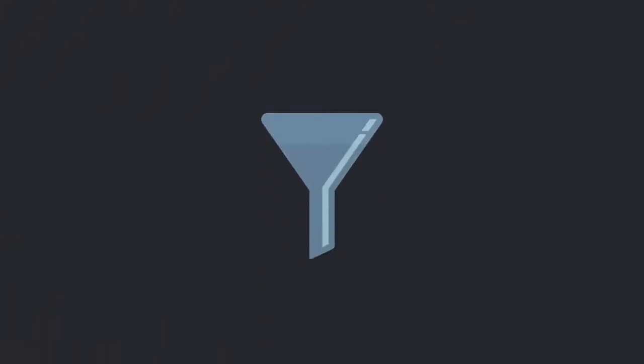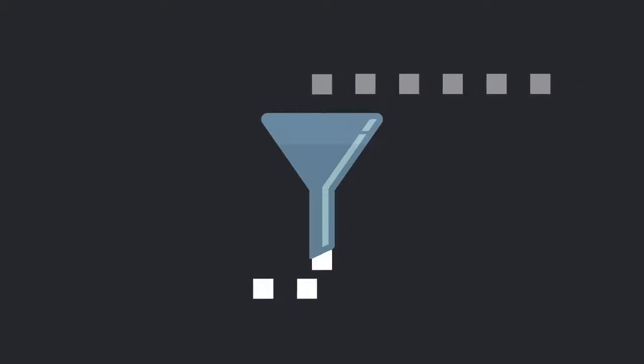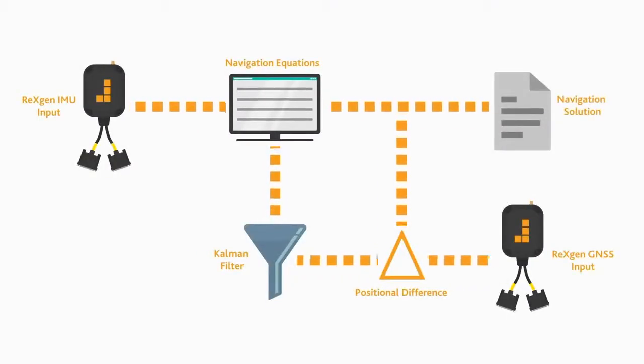Kalman filter algorithms work by observing data over time to reduce noise and produce reliable values. Using this filter, the positional difference is input to correct the navigation equations and any positional errors that have occurred to provide a very reliable navigational solution.